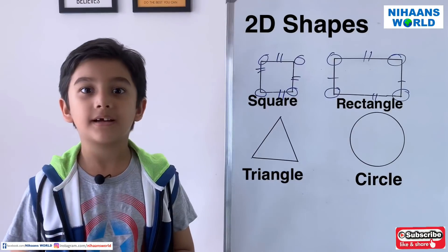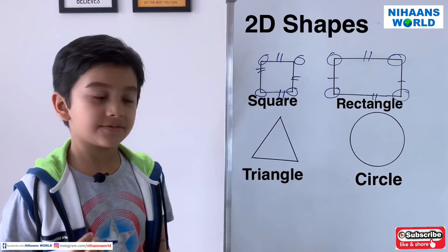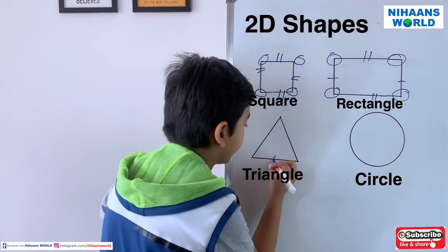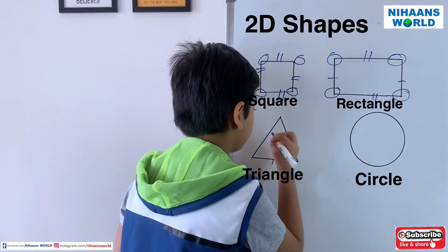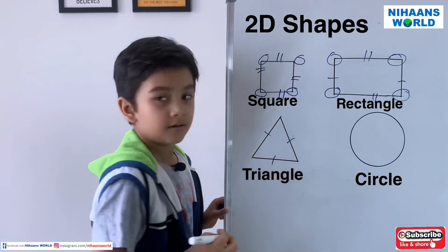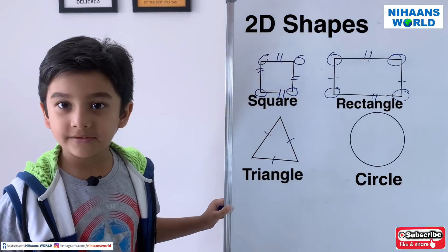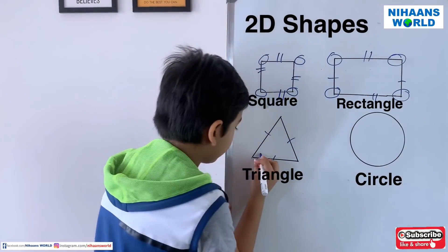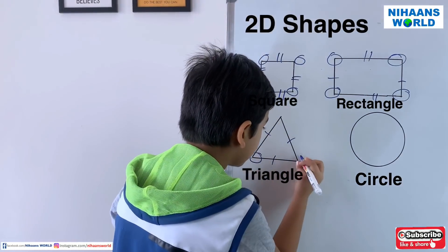A triangle has three sides and three vertices or corners.